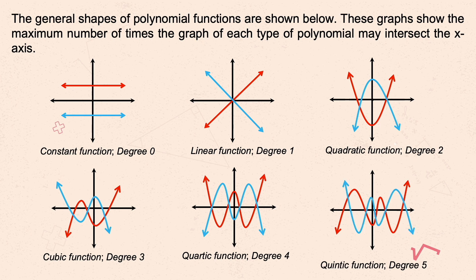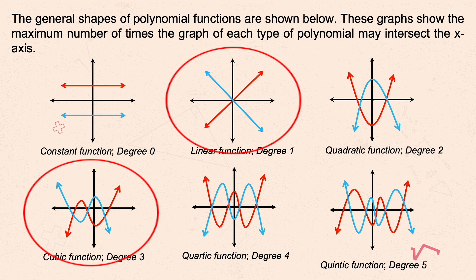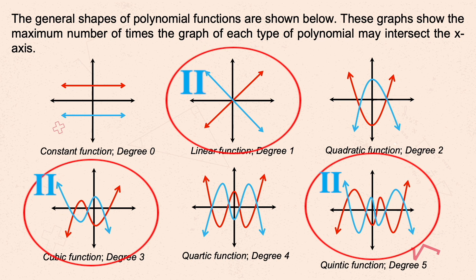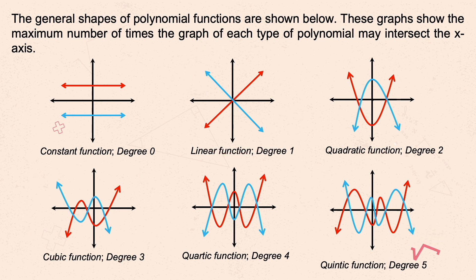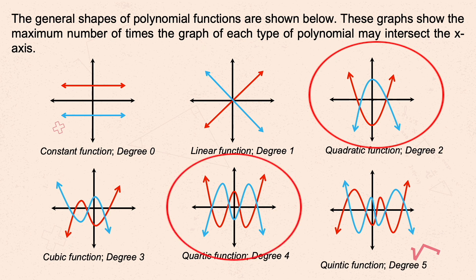Notice that degree one, degree three, and degree five share a similarity: for positive leading coefficients they all start in the second quadrant and end in the fourth quadrant. For a positive leading coefficient the graph goes upward, and for a negative leading coefficient it goes downward. You can make a summary from these given examples.